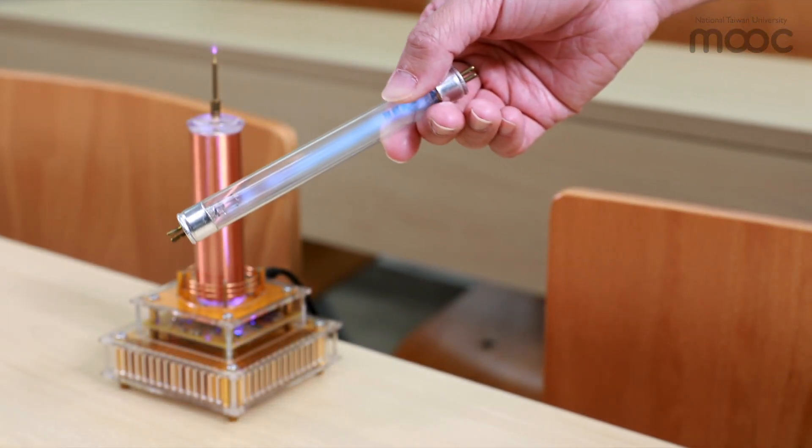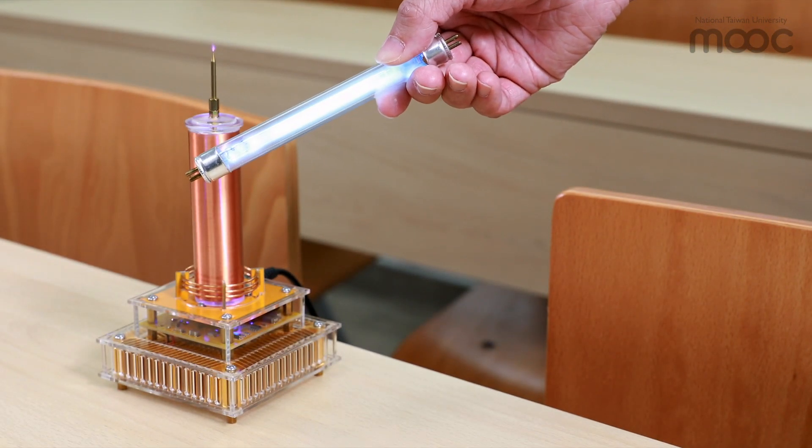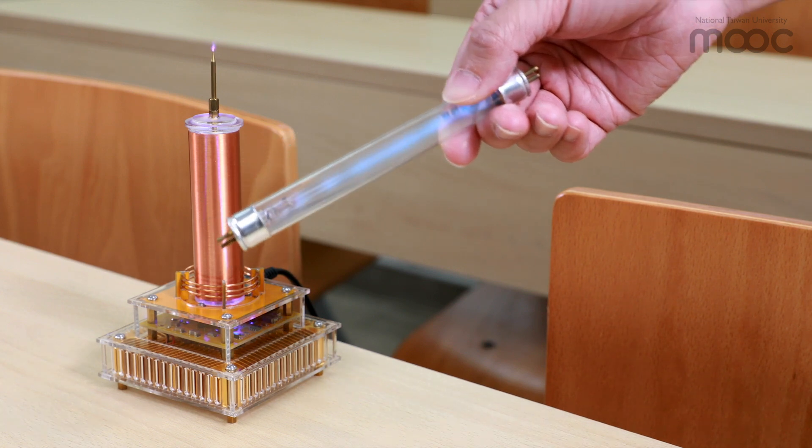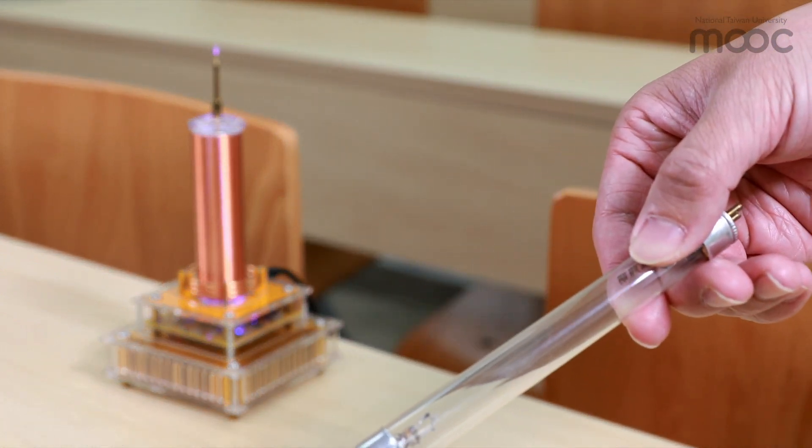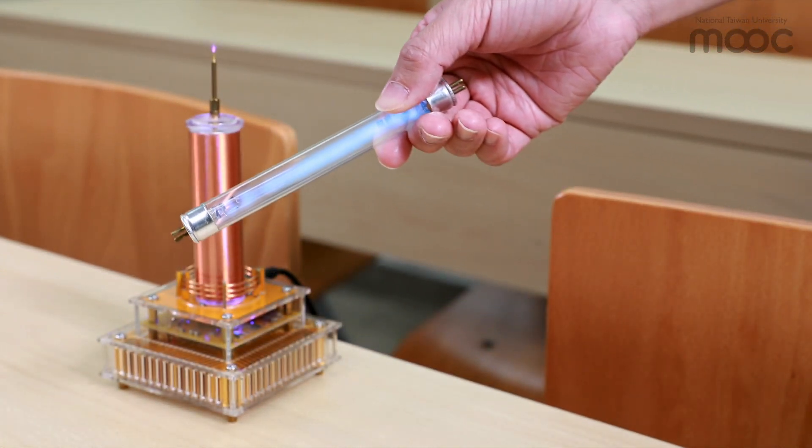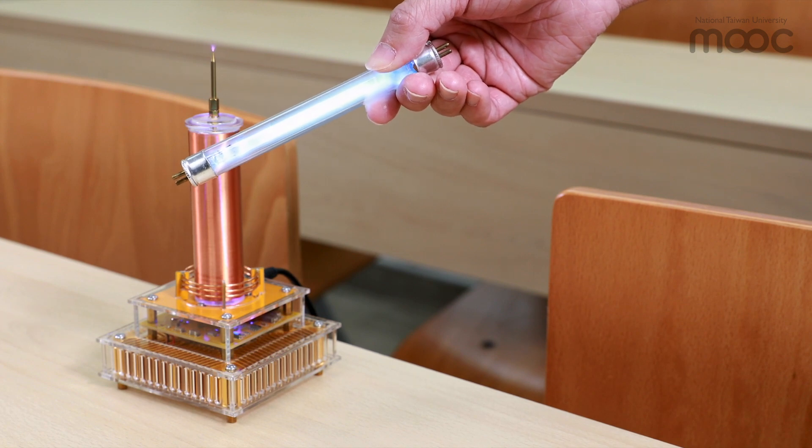As discussed previously, the transmitted intensity from the Tesla coil decreases rapidly with distance, as shown by moving the light tube slowly away from the coil.